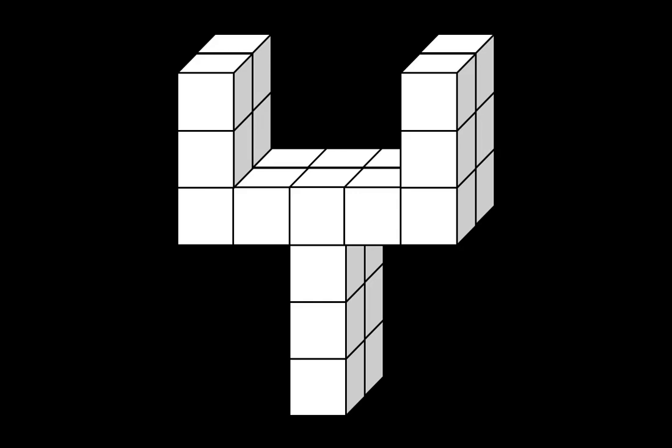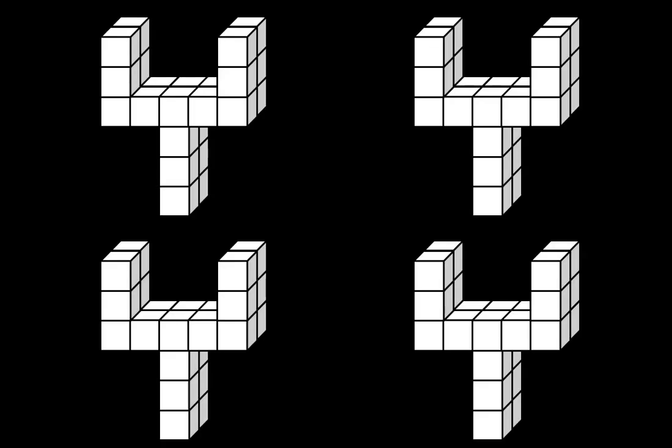Let's continue by seeing how some people break this structure apart. Here are four copies of the structure. One way that some people break this apart is to see a group of 12 in the front and another group of 12 in the back. Or to see four groups of 6. 1, 2, 3, 4.